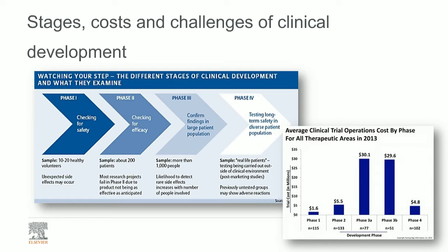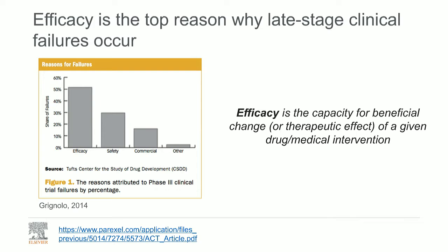Here's an example where the estimated cost of a phase three trial is around 30 million US dollars. There are many such numbers circulating, but they all point to the high cost of phase three trials, mostly associated with the high number of patients enrolled. We really would like to avoid late-stage clinical failure due to the associated costs. Research shows that efficacy is the main cause — around 50% of all late-stage clinical trials that fail, fail due to efficacy reasons.